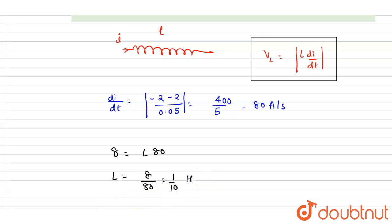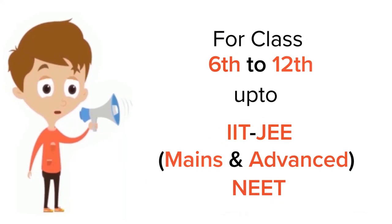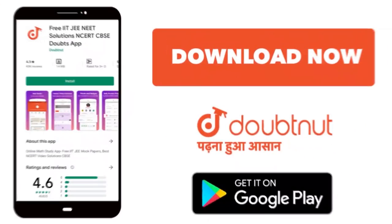And this is the answer of this question. Now you can check for the option 0.1, that is D is the correct answer here. Thank you. For class 6-12, IIT-JEE and NEET level, trusted by more than 5 crore students, download Doubtnut app today.